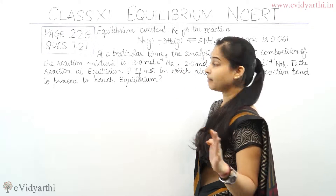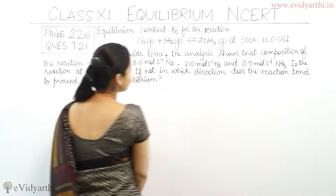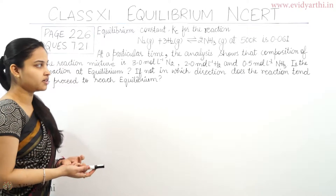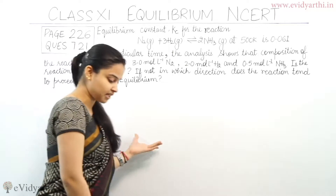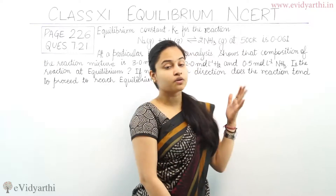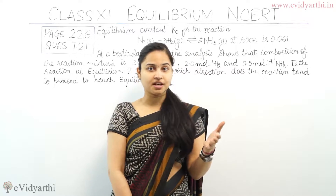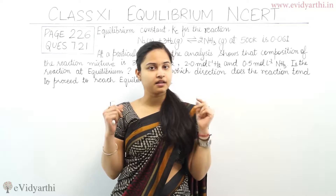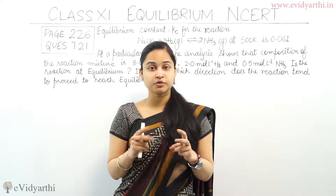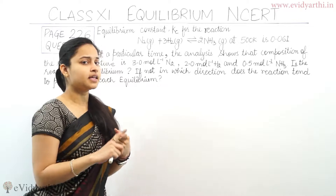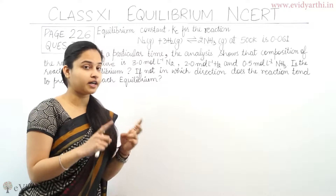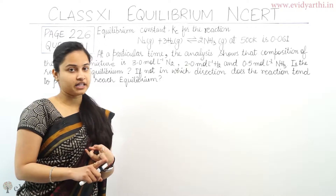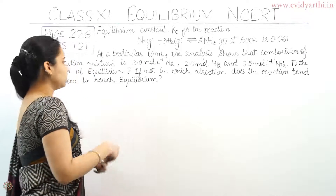We are asked: is the reaction at equilibrium? Second, if not, in which direction does the reaction tend to proceed to reach equilibrium? So there are two parts in question number 21. We have to tell whether the reaction is at equilibrium and if it is not, then in which direction the reaction will proceed to reach equilibrium. So let's look for the solution.